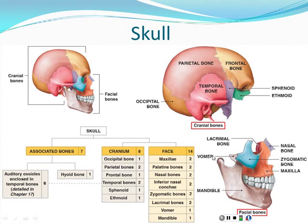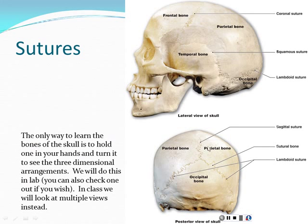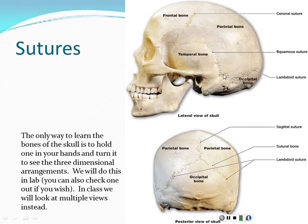For the facial bones, we have a maxilla on each side. The textbook tries to keep colors consistent from picture to picture so the frontal bone is always one color and the temporal bone always another - a visual clue. Where the bones of the skull come together is a special kind of bony joint called a suture. You can see how the temporal bone and parietal bone join together with this twisty, interlocking arrangement of bone.